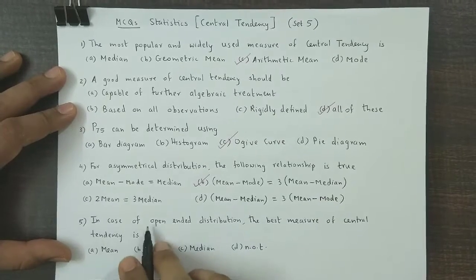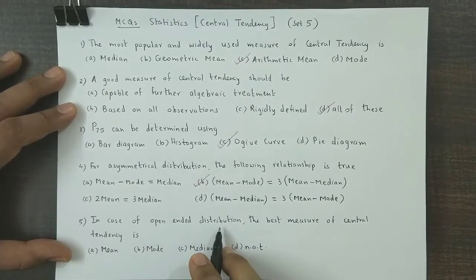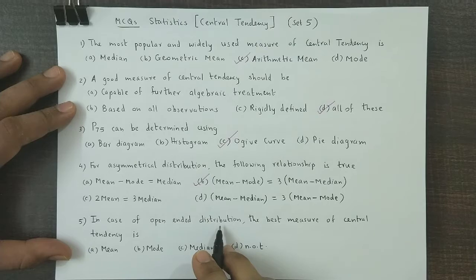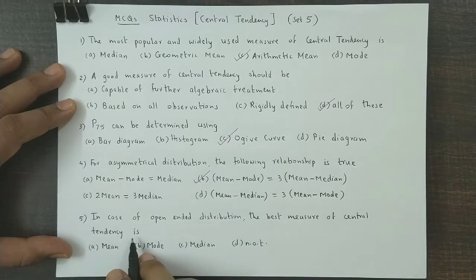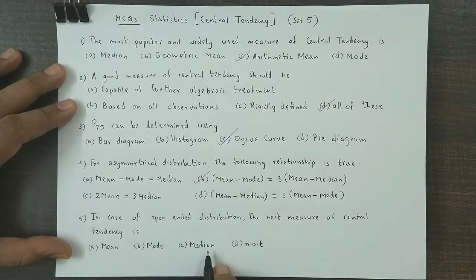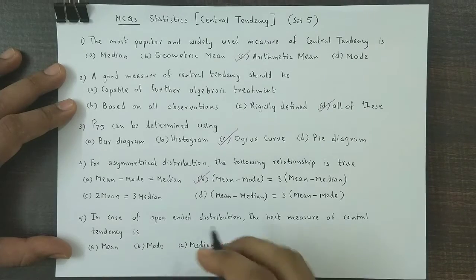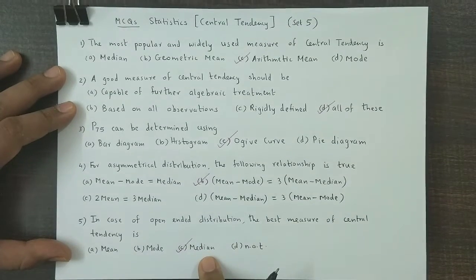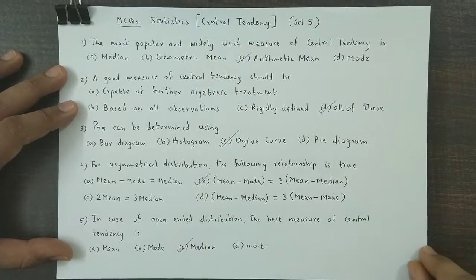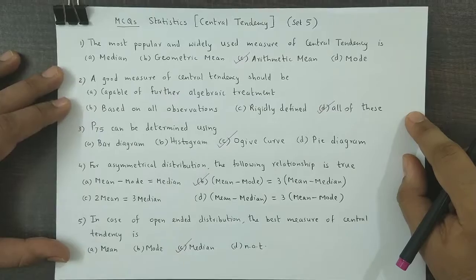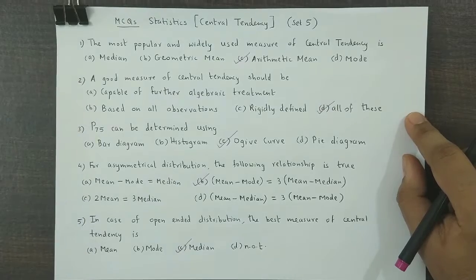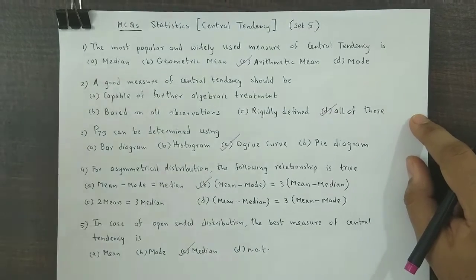Question 5: When we deal with an open-ended distribution, the best measure of central tendency is — options are mean, mode, median, none of these. The answer is median, because median focuses only on the central 50% of the observations.